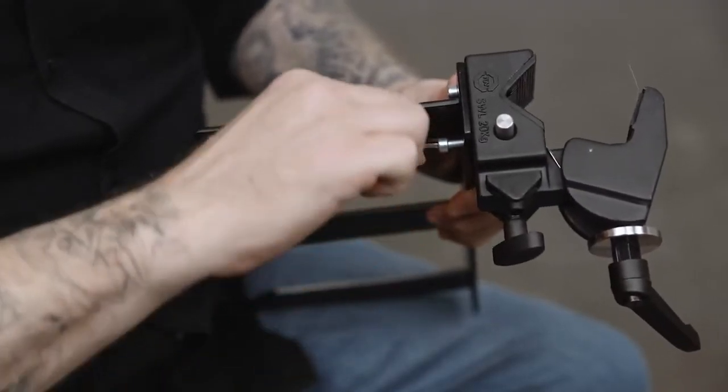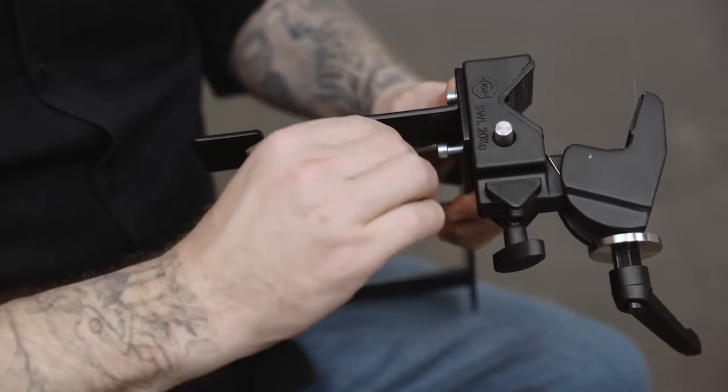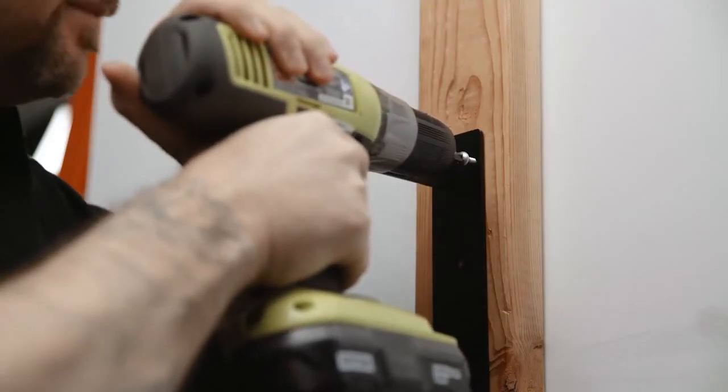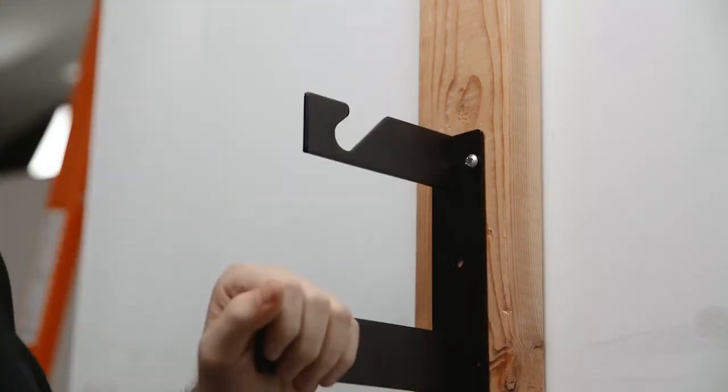First, we'll mount our Kupo triple hooks to combi clamps by attaching them with the provided screws. Alternatively, the triple hooks can be mounted directly to a wall or flat surface using appropriate fasteners and clips for the job required.